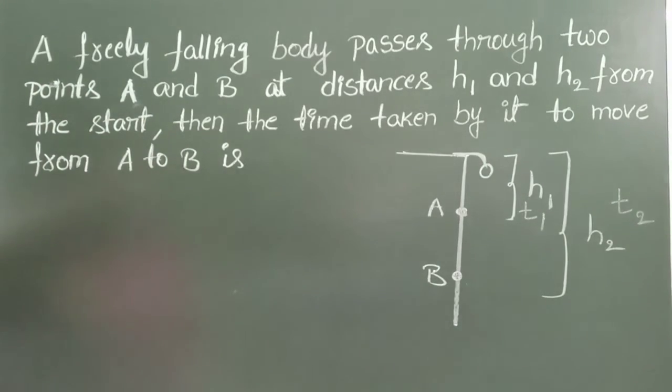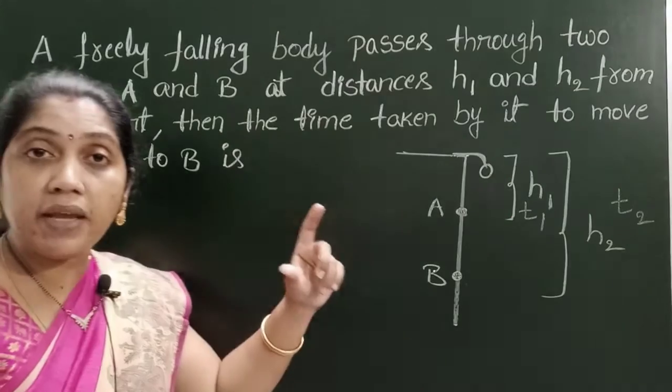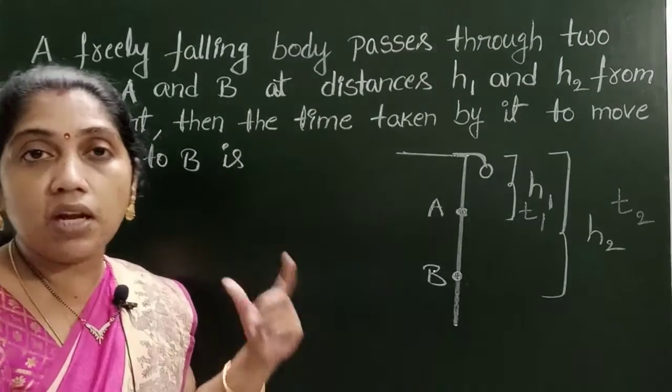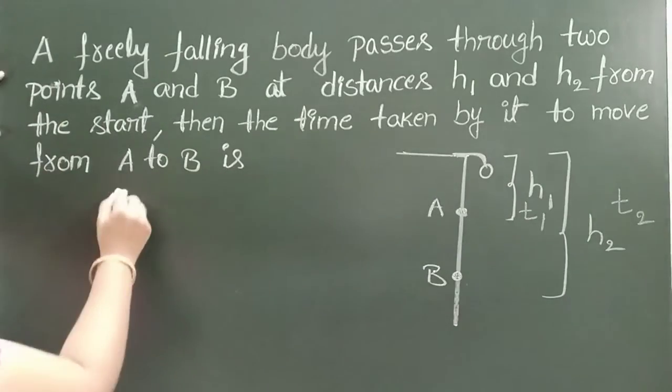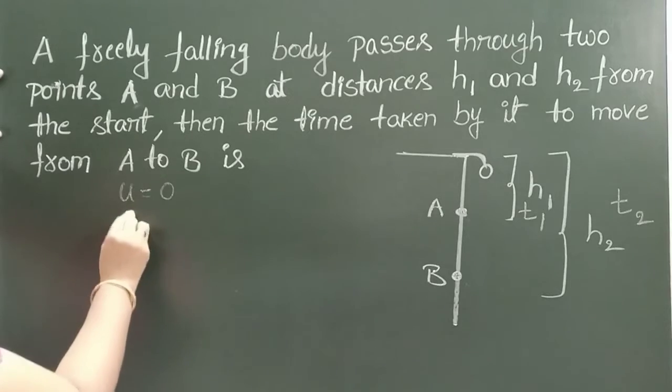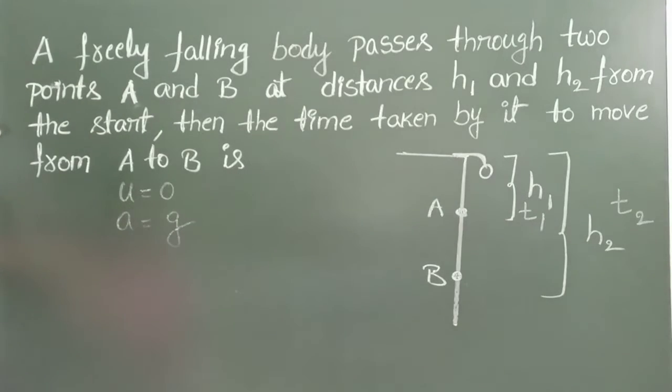So first we know the distance travelled by a freely falling body. We know initial velocity of freely falling body equals 0 and acceleration due to gravity a equals g and the height is H1. Take second equation of motion.